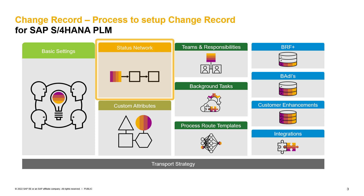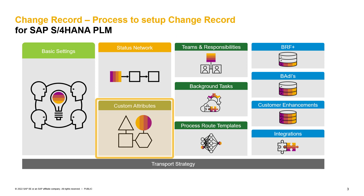When talking about the status network, merge and splitting should also be covered. Do you allow merge and split? If yes, for which change record types and for which status? The next topic is about custom attributes on the change record. You should define which customer-specific fields you want to have available on the change record header as well as on the change record items. You can also integrate SAP-specific fields from other components available on the database tables. These fields can then be controlled via the change record field control. For dynamic field control, you should answer which fields you want to have as mandatory, read-only, in edit mode, or hidden in which user status.